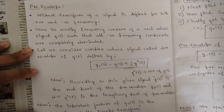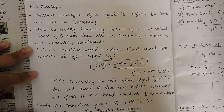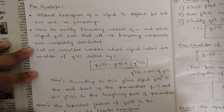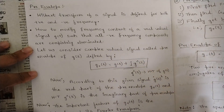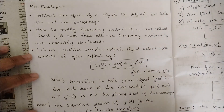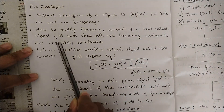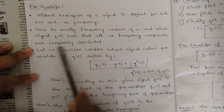Hilbert transform of a signal is defined for both positive and negative frequencies. Since phase reversal takes place for both positive and negative frequencies — that is, for plus 90 degrees as well as minus 90 degrees — the phase reversal would be taking place in clockwise as well as anti-clockwise direction. So it is defined for both positive as well as negative frequencies.